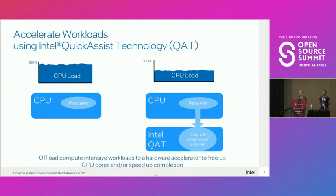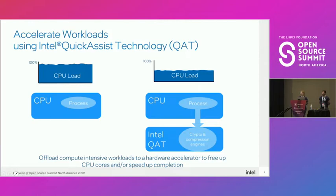A little bit of background on the concept of acceleration. If you've got a compute-intensive workload running on your CPU, it might be fully utilized — 100%, no cycles available for anything else. If you design some special hardware, as we've got in the QuickAssist device, to do compression or cryptography — things that are quite compute-intensive — then you can offload the process from the CPU and free up cycles, allowing your workload to complete faster or use fewer CPU cycles.